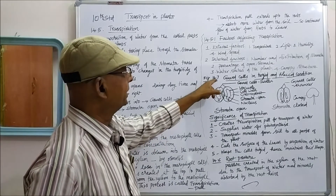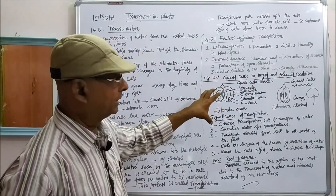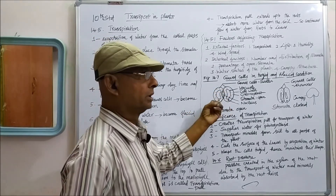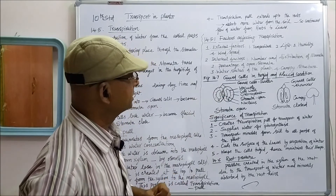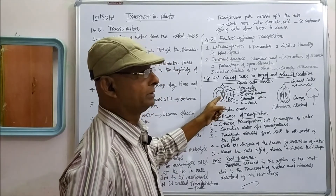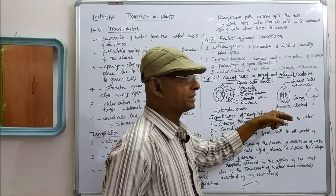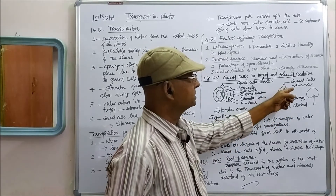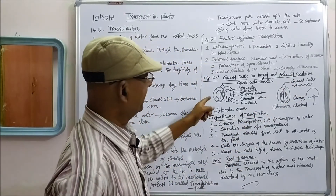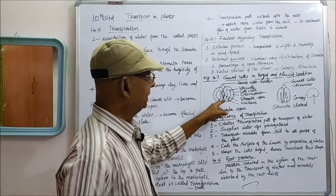Refer to diagram figure 14.7. The guard cells in turgid and flaccid condition are given in detail. When more water enters into the guard cells, the guard cell will swell — that is the turgid condition. During endosmosis, more water enters into the cell making the guard cells turgid. When water comes out of the guard cells due to some external factors, the guard cell becomes flaccid — that is, shrinking of the guard cells takes place.